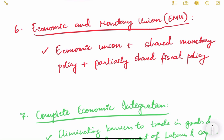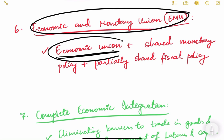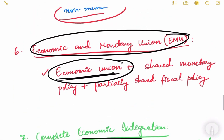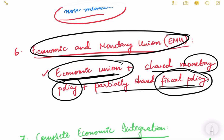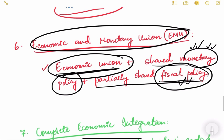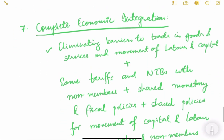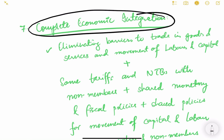An Economic and Monetary Union includes all conditions of an Economic Union, plus a shared monetary policy and a partially shared fiscal policy among member countries. Members align their monetary policies — they can have a common currency and common inflation targeting — and their fiscal policies are also partially aligned with each other.